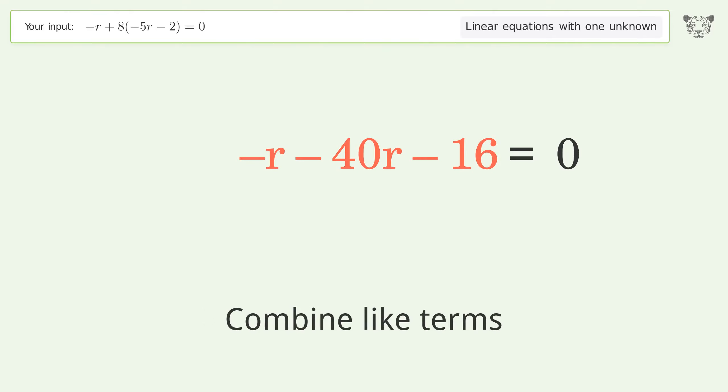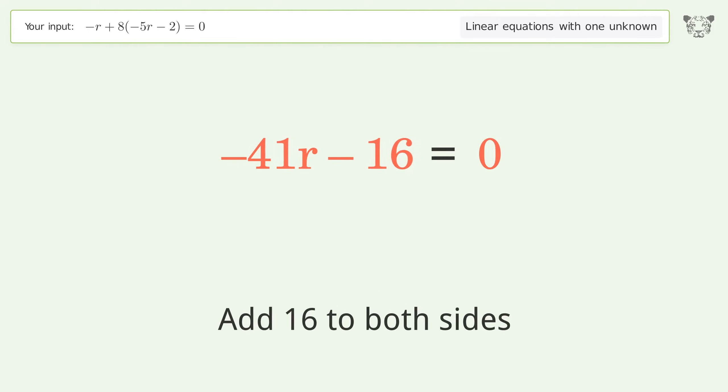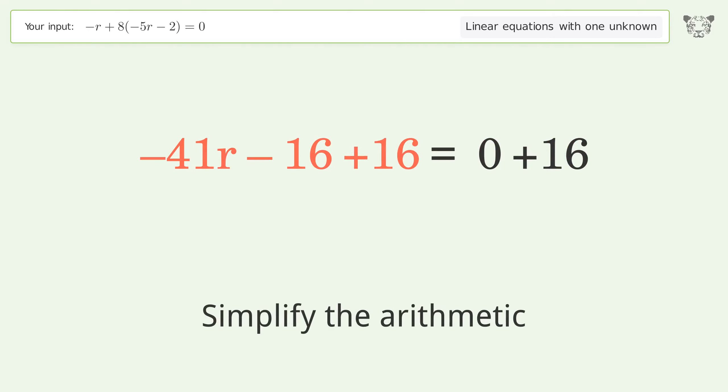Combine like terms. Group all constants on the right side of the equation. Add 16 to both sides. Simplify the arithmetic.